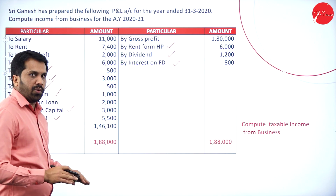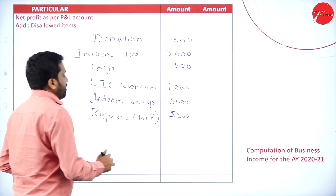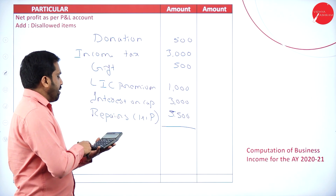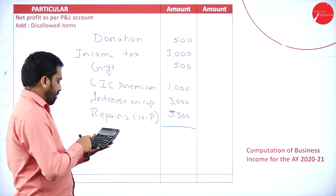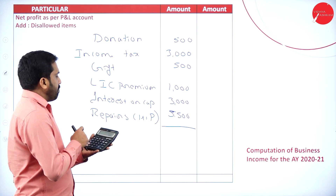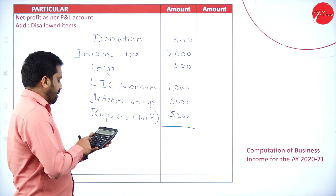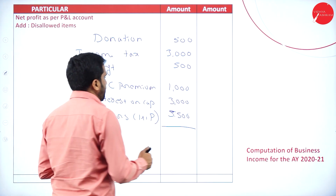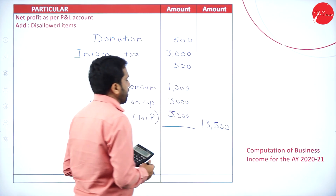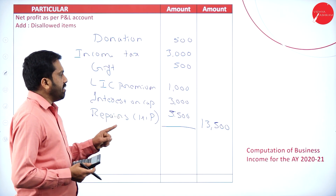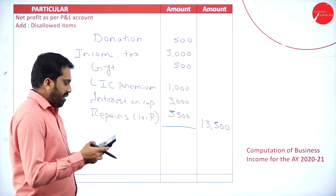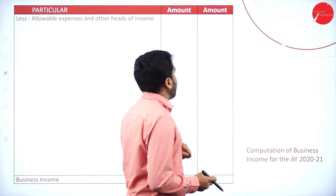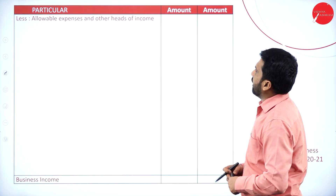Is there anything else? No, nothing. Now we will add all these: 500 plus 3,000 plus 500 plus 1,000 plus 3,000 plus 5,500. Total is 13,500. So 13,500 is the total of disallowed expenses and non-business items to add back. Now we must subtract all allowable expenses and other head incomes.